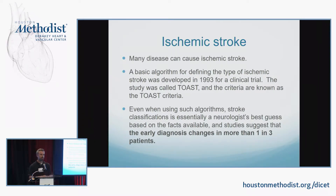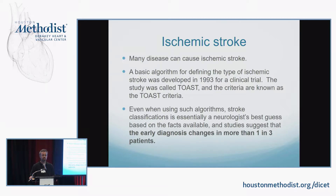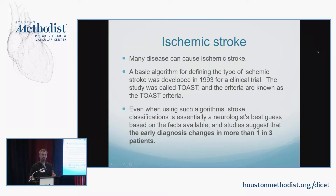Ischemic stroke is the core of what I do, and many diseases cause it. Since we're here with cardiologists, many things that go on with the heart are related to ischemic stroke. One of the things we try to do is get to the bottom of the cause — the etiology or categorization. The TOAST criteria are what we use. TOAST is really an acronym from a study that was done that was negative and doesn't mean anything anymore, but the criteria developed for that study are still used. With this algorithm we arrive at our diagnosis — for example, telling a patient they've had a stroke from cardioembolism.